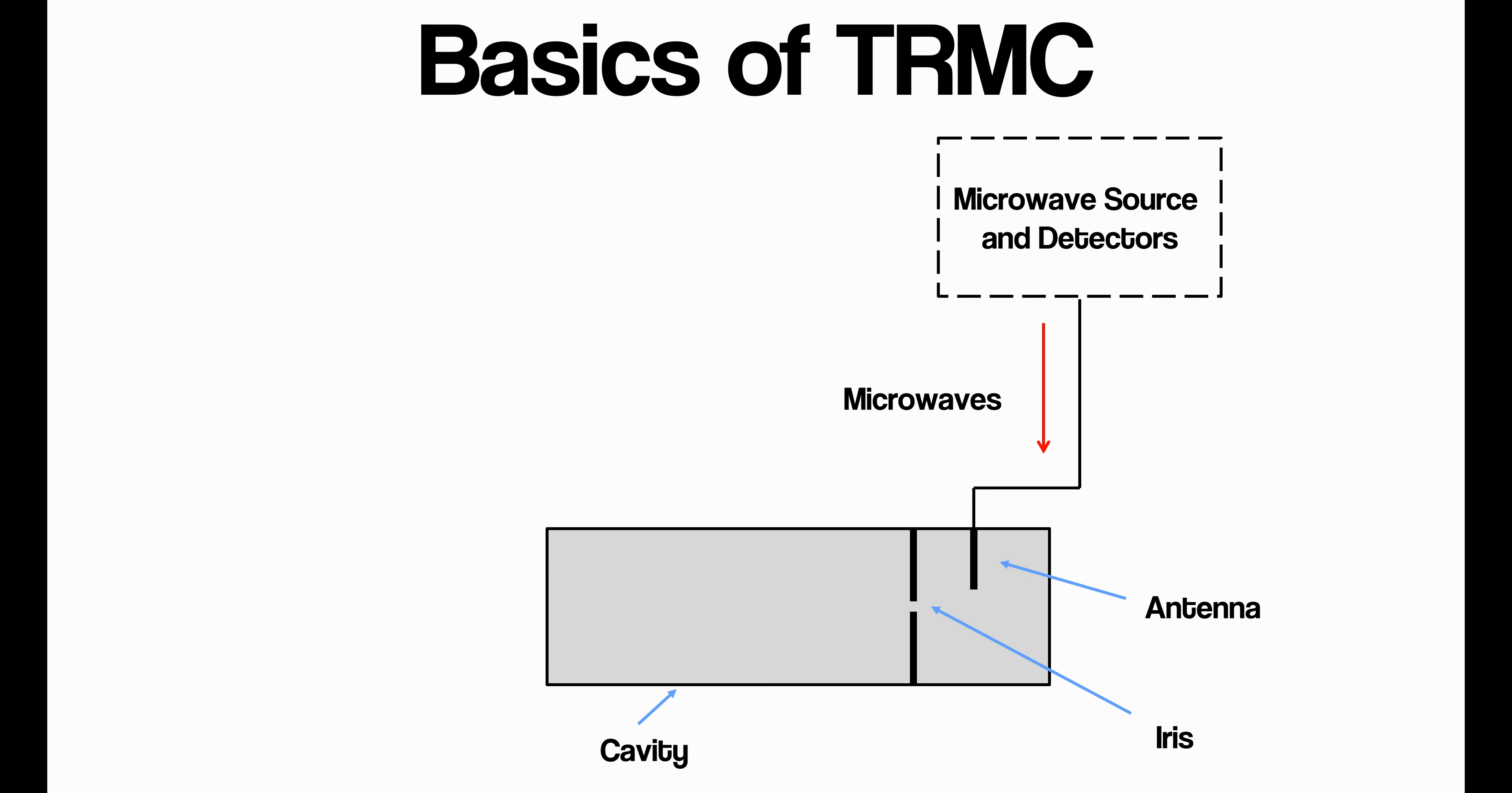So the electromagnetic waves are emitted from the antenna, and then they pass through a small iris, which is just basically a circular aperture, and into the main portion of the cavity. So the cavity is made out of metal, typically copper or something like that. And to the microwaves, the metal is reflective.